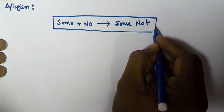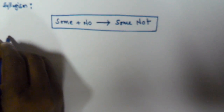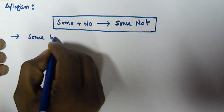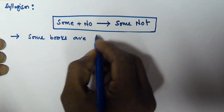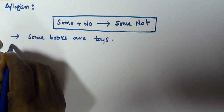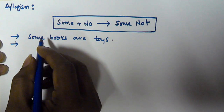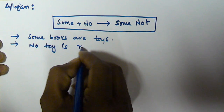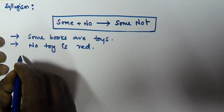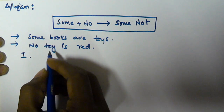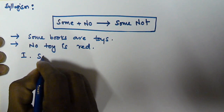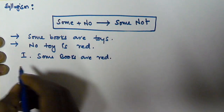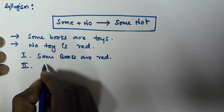Let us assume two syllogism statements are given. The first is: 'Some books are toys.' The second statement is: 'No toy is red.' The first conclusion given is: 'Some books are red.' The second conclusion given is: 'Some books are not red.'